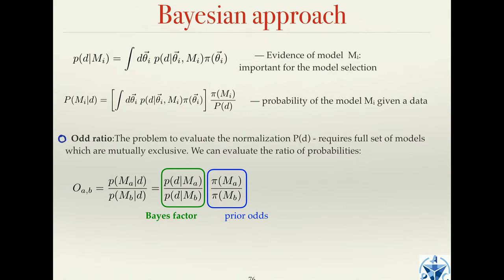The ratio of probabilities is given by the ratio of evidence — that's what's called the Bayes factor. Plus the ratio of your prior odds: if you believe one model is more likely before analyzing data, you should use this. Often it's set to one, but if you have some prior information that one model is preferred, you should use it here. Usually people set the prior odds to one and concentrate on the Bayes factor.